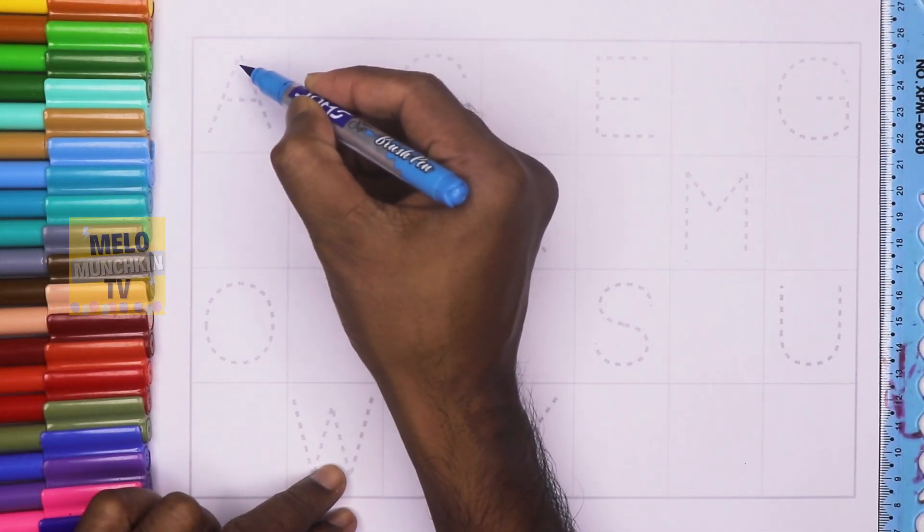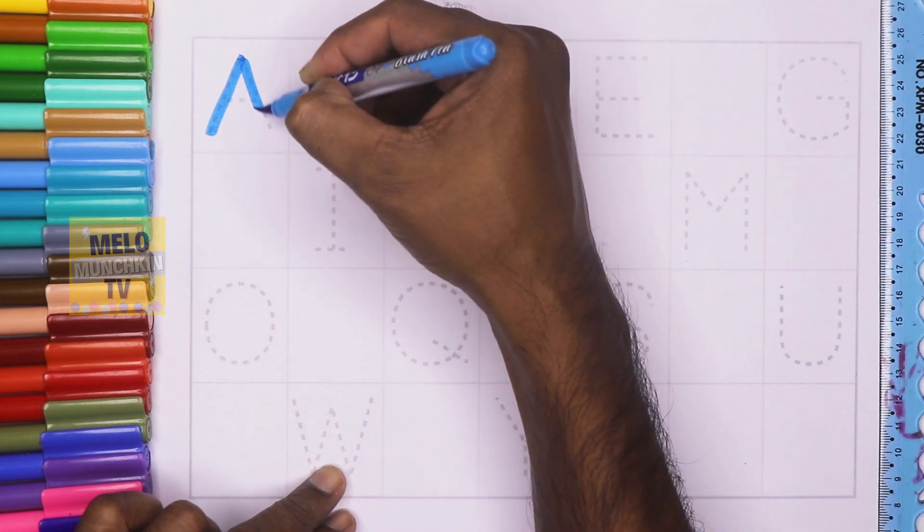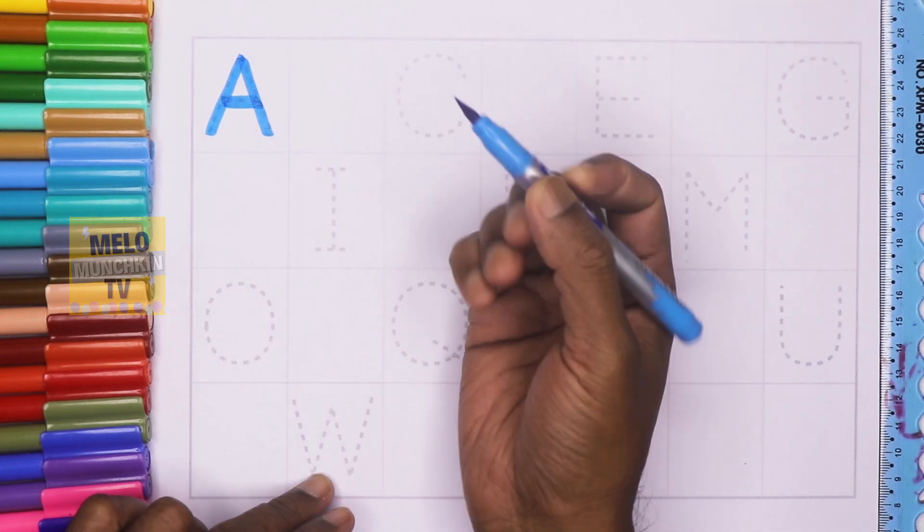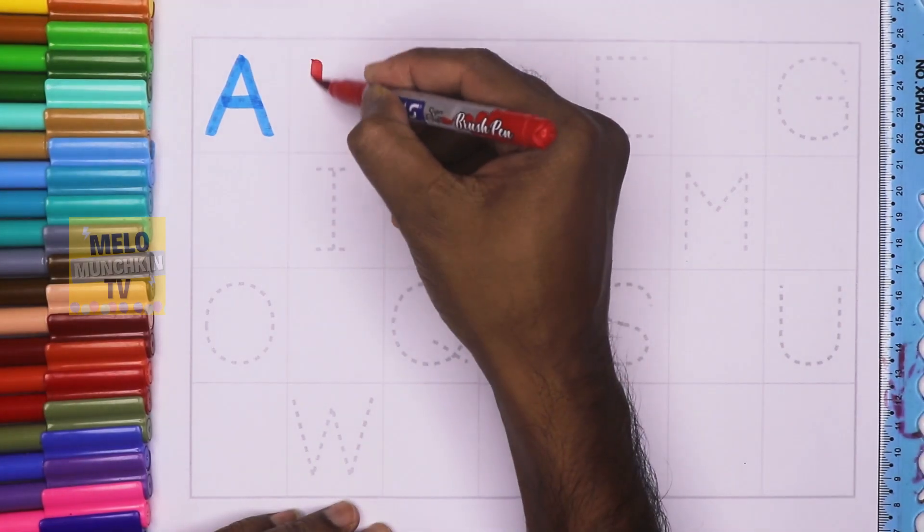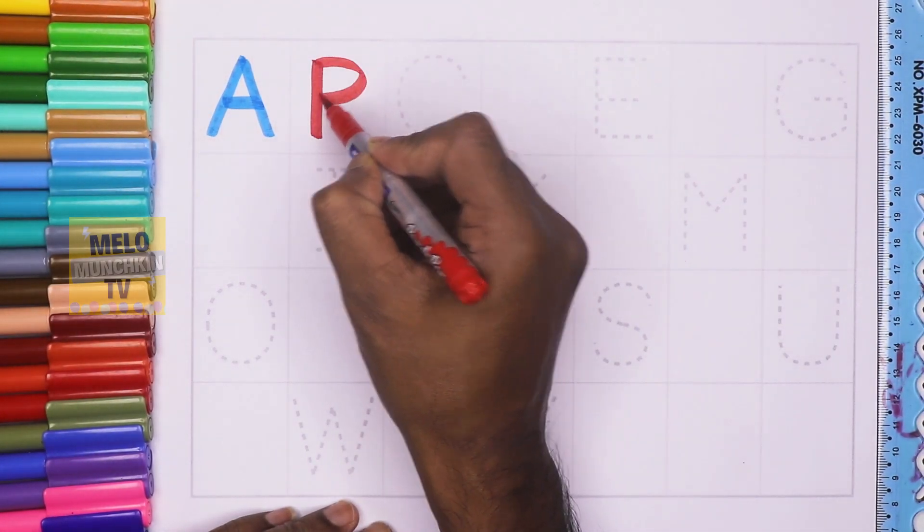A for Apple. This is blue color. B for Baby.